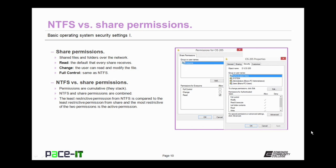Now share permissions are a little bit different. Share permissions involve network shares. There are three basic permissions on network shares. There's Read, which is the default that every share receives, otherwise you wouldn't have shared it. Change — the user can read and modify the file. And then there's Full Control, which is the same as in NTFS.